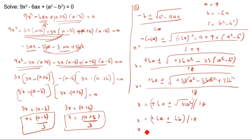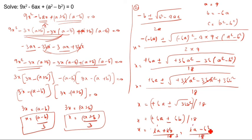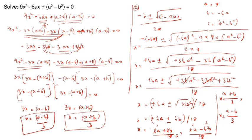So x equals (6a plus 6b)/18 or (6a minus 6b)/18. Simplifying by dividing numerator and denominator by 6: x equals (a+b)/3 or x equals (a minus b)/3. Which method is easiest for you? You have to choose and solve for the x value. Thank you for watching this video.